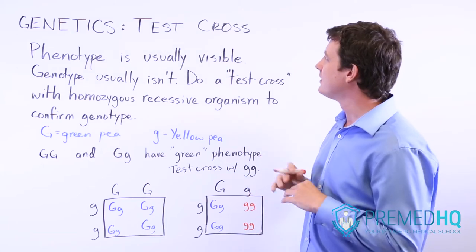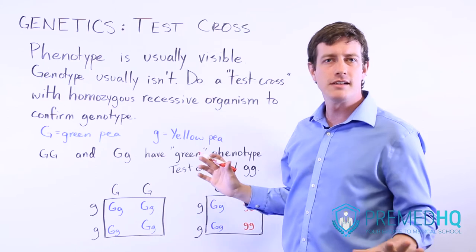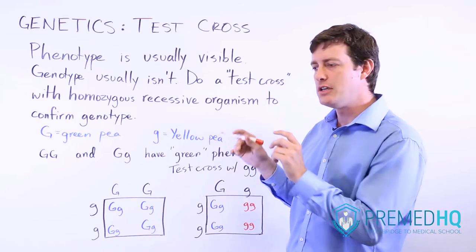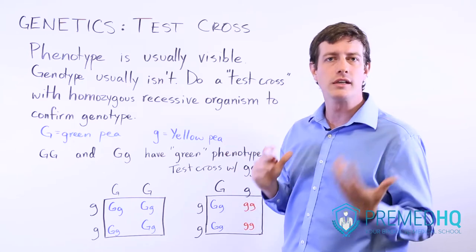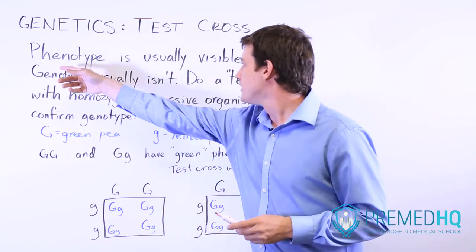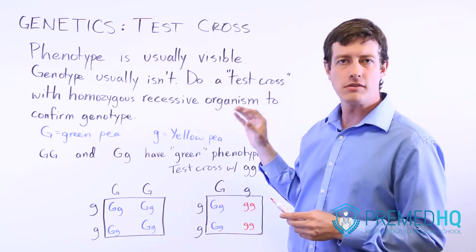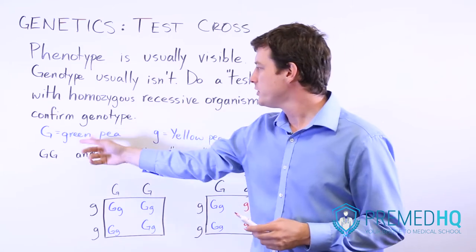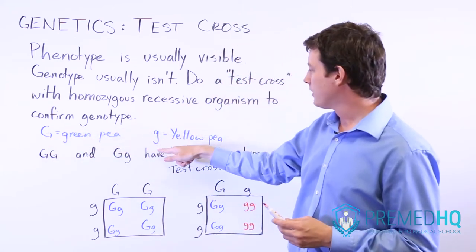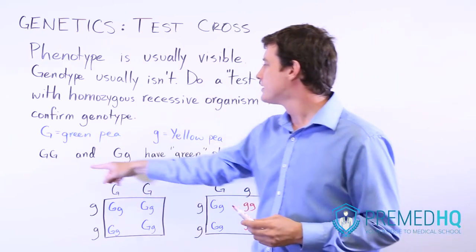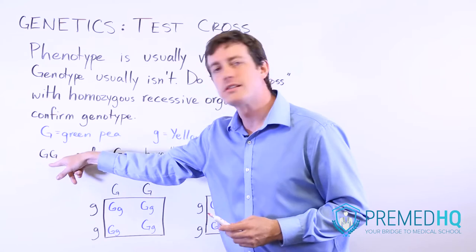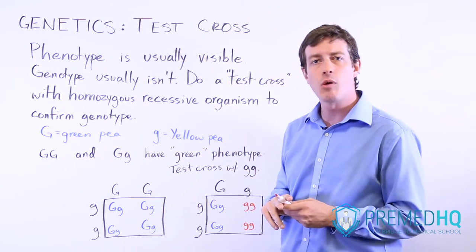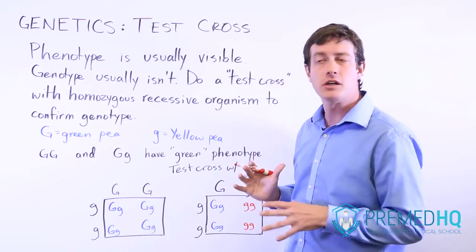With normal Mendelian inheritance patterns where the dominant allele exhibits a dominant phenotype and you need to be homozygous recessive to exhibit the recessive phenotype, the phenotype will be visible and easy to identify. But the genotype might be difficult to determine. For example, capital G is a green pea and lowercase g is a yellow pea. Both the homozygous dominant (GG) and the heterozygous (Gg) will have the green phenotype, so we won't be able to tell just by looking at the organism what its genotype is.